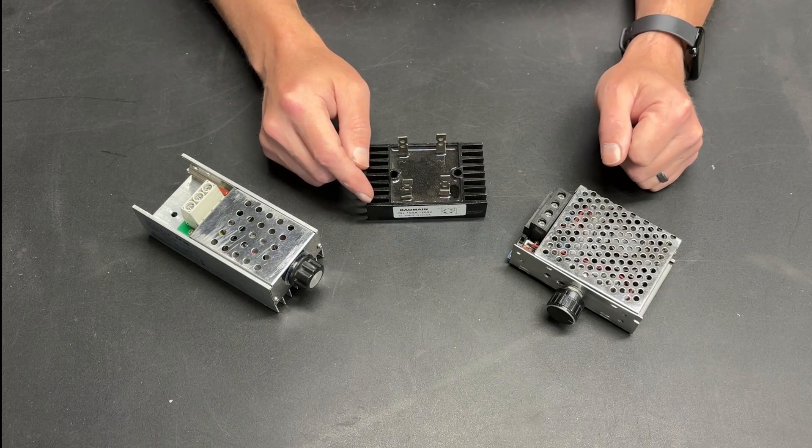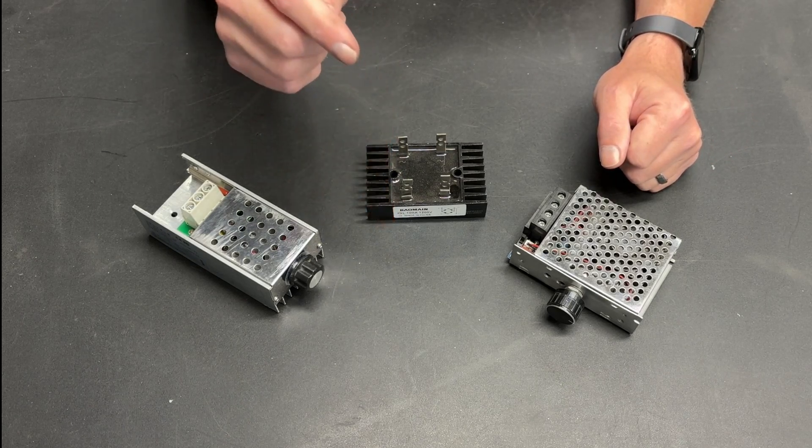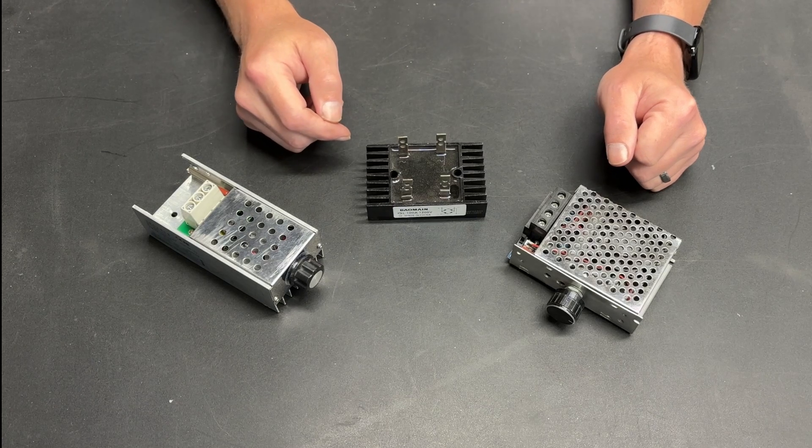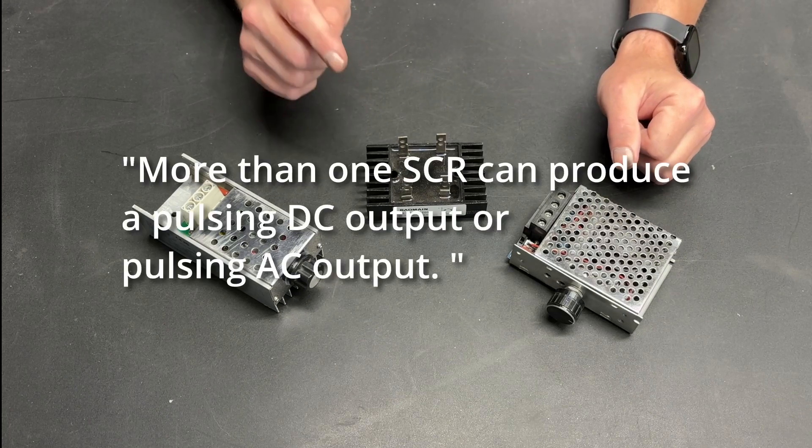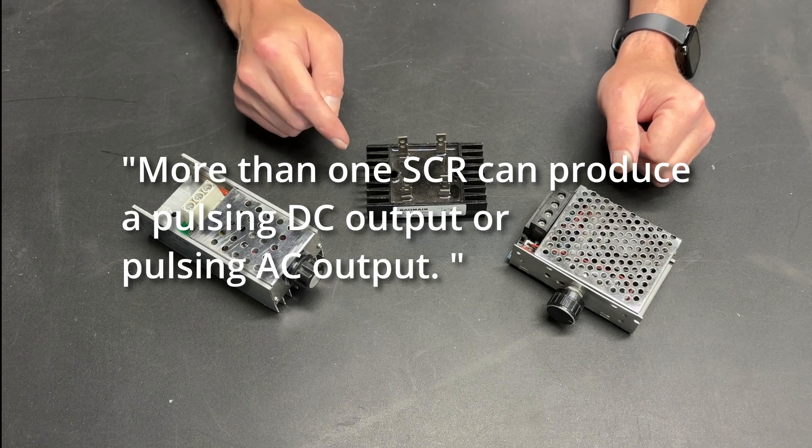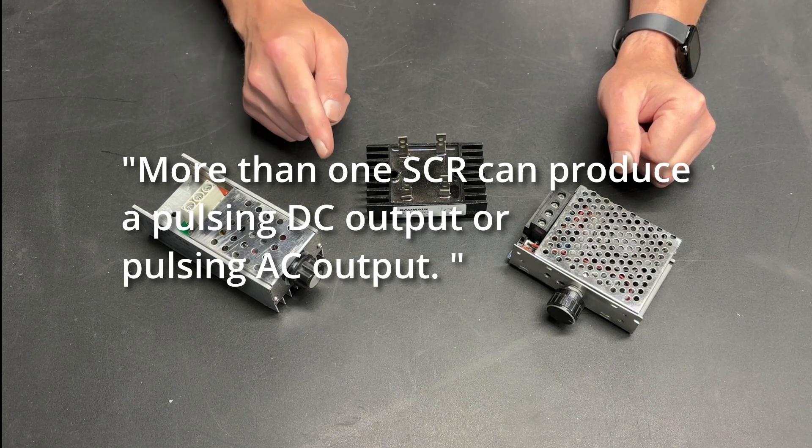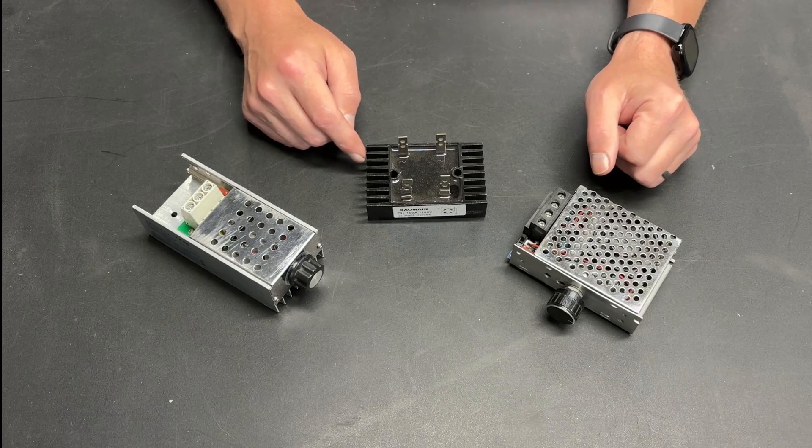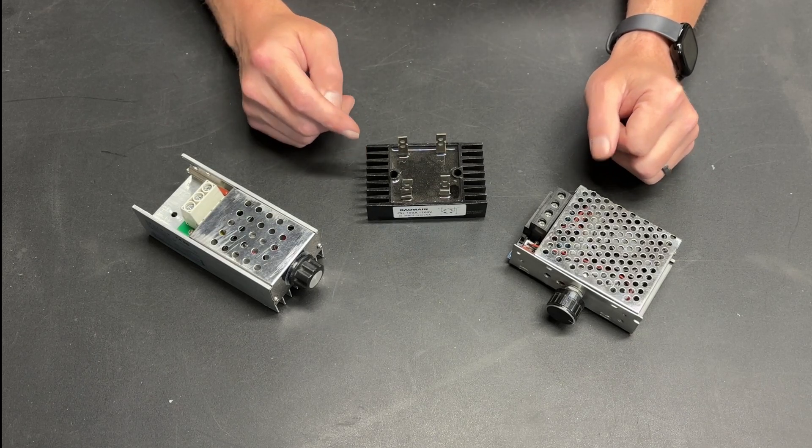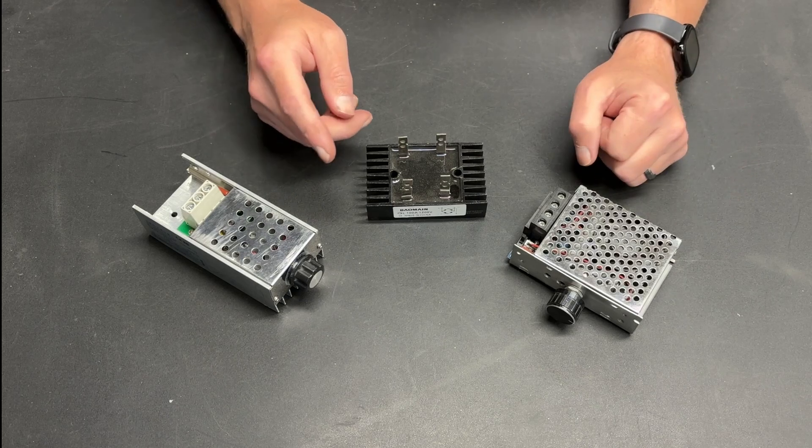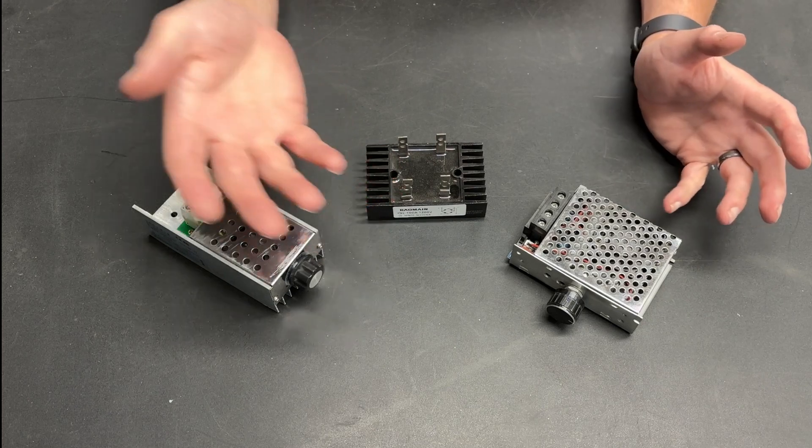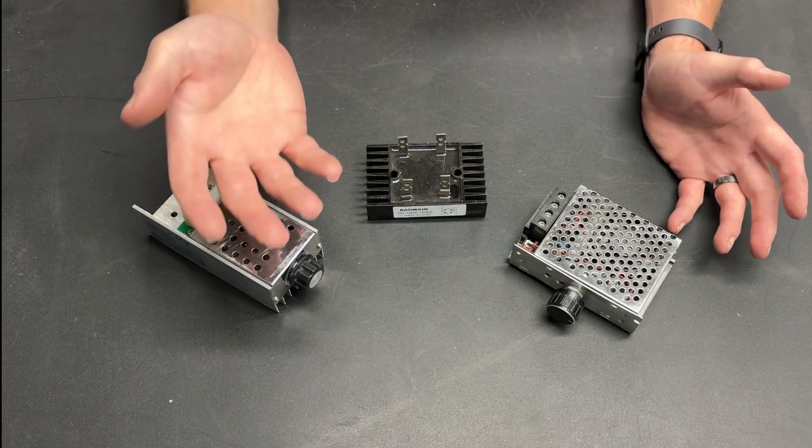What am I missing? And then it occurred to me, I read once again what the definition of an SCR was and how they work. And it said more than one SCR can produce a pulsing DC output or pulsing AC output. And that got me thinking, what exactly is a TRIAC? Is it possible that a TRIAC is nothing more than one chip that contains two SCRs, allowing it to produce AC power?